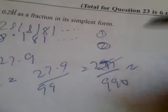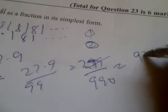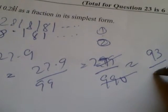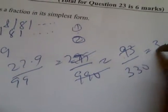Now 3 into this is 93 over 3 into this is 330. Now 3 again into this is 31 over 3 into this is 110.